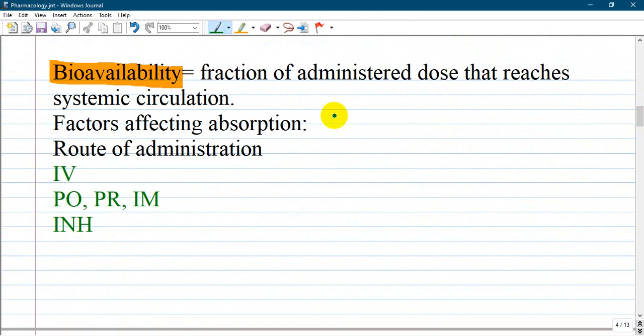Bioavailability by definition is fraction of administered dose that reaches systemic circulation. The main goal is to reach the blood vessel with the drug. Factors that affect absorption include route of administration. Intravenous administration has 100% bioavailability of the drug, as you're administering directly in the vein. It's available 100% and this is very predictable.